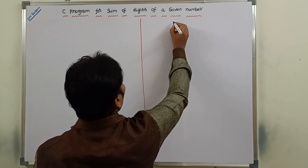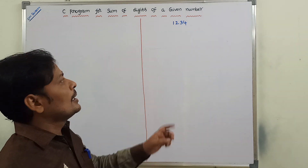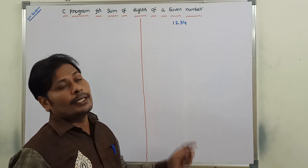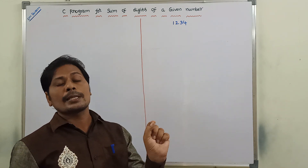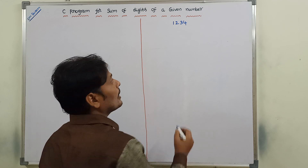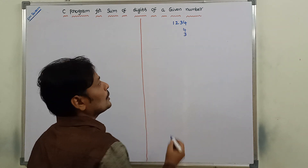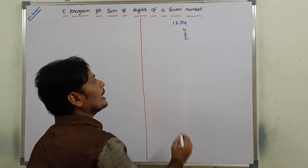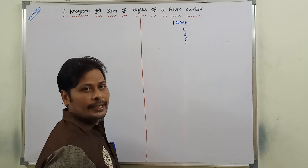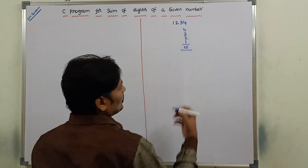Suppose I am taking the number from the keyboard: 1234. This is the given number. First, we have to find out the individual digits of this number and sum those individual digits. The individual digits are: 4, 3, 2, and 1. After finding out the individual digits, we have to sum them: 4 plus 3 plus 2 plus 1, that is equal to 10.